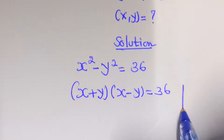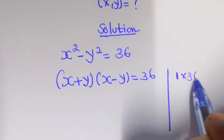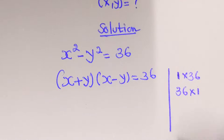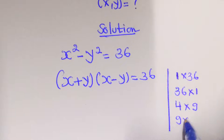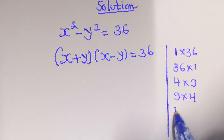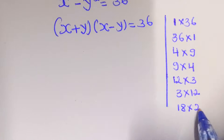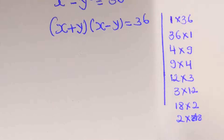Right here, we shall say: you can take 1 times 36, and 36 times 1; and 4 times 9 and 9 times 4; and 12 times 3 and 3 times 12; and 18 times 2 and 2 times 18; and 6 times 6.